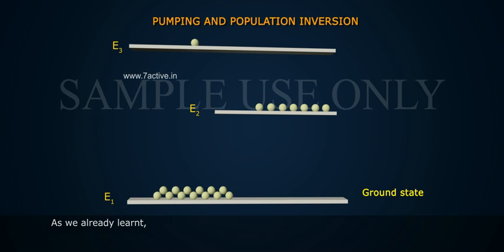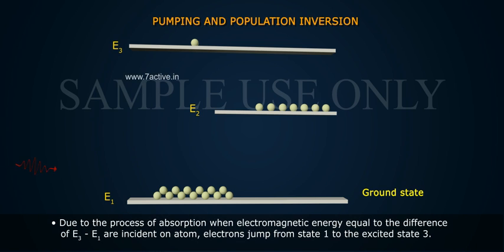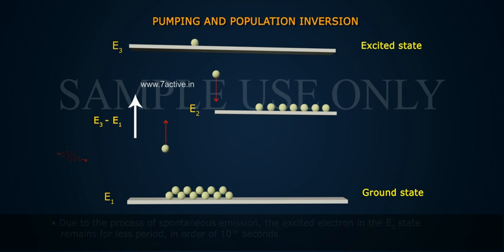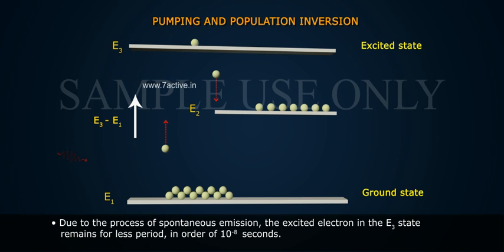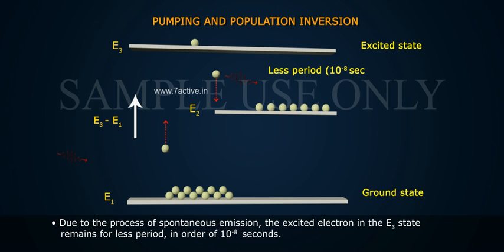As we have already learned, due to the process of absorption, when electromagnetic energy equals to the difference of E3 minus E1 are incident on atom, electrons jump from state 1 to the excited state 3. Due to the process of spontaneous emission, the excited electron in the E3 state remains for less period, in order of 10 power minus 8 seconds.